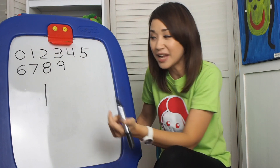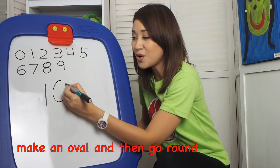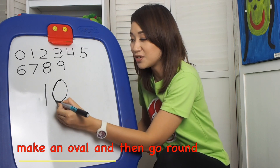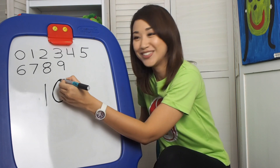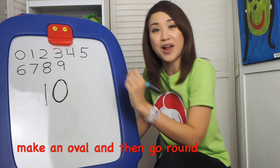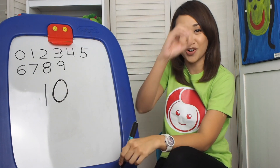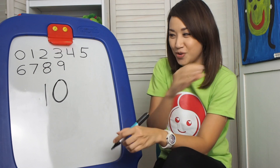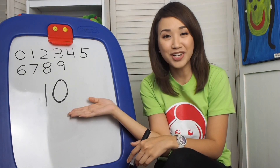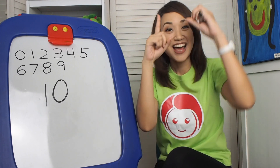How do we write number 0 again? Make an oval and then go round. Make an oval and then go round to make the number 0. So what is our last number? Very good! Number 10!